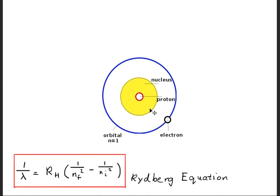Here we have the Bohr model of the hydrogen atom. Within the nucleus we have the proton, and on the first orbital, or the first energy level, we have the electron. The proton and the electron are two elementary particles. We use the Bohr model to derive the Bohr radius, the energy levels for the hydrogen atom, as well as the Rydberg equation.